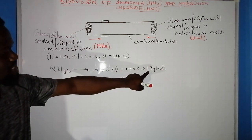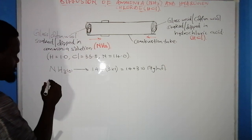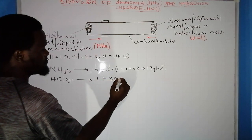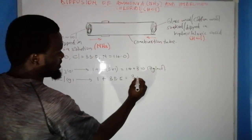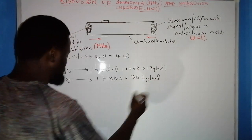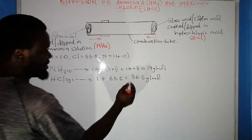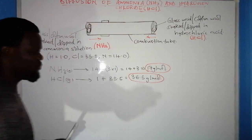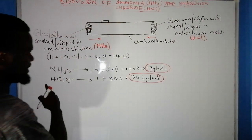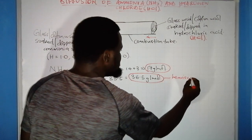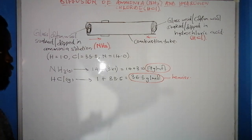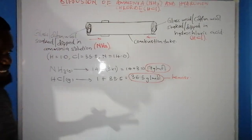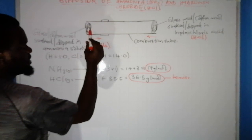For hydrogen chloride gas (HCl): hydrogen is 1 plus chloride is 35.5, giving a total of 36.5 grams per mole. When we compare the molecular masses, HCl at 36.5 g/mol is heavier than ammonia at 17 g/mol. This means HCl will move very slowly compared to ammonia, which moves very fast because its molecular mass is lesser and it is lighter.